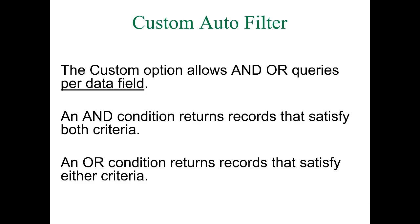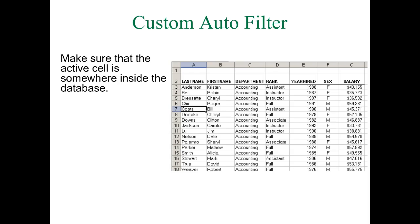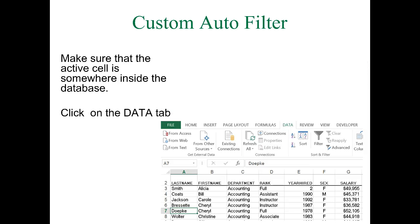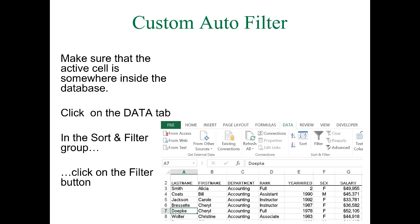Open the workbook we used last video — the link is above this video — and go to the Faculty Data sheet. You should see the faculty database. The first step in working with a database in Excel is to always have the active cell in the database, because Excel will detect it and perform some steps for you. Make sure the active cell is in the database, then on the menu tab click Data, and in the Sort and Filter group click on Filter.